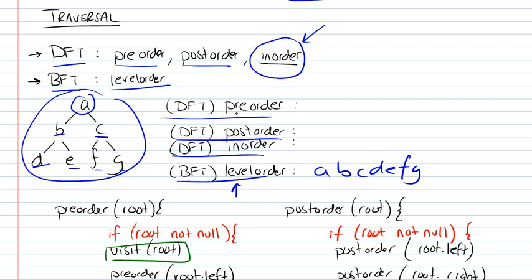The DFT pre-order traversal would mean that first we would dig deeper into the tree but we would visit the node before visiting its child node. So we would visit A first and then B because we're digging deeper and then D. So we finish this branch, then we go back here to E and then we're going to C, F, G. So this is pre-order traversal.